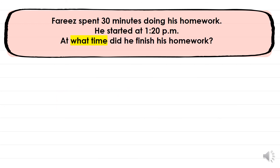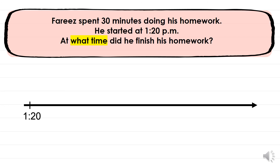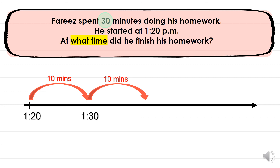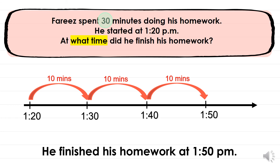Now let's move on to our last word problem in finding ending time. Faris spent 30 minutes doing his homework. He started at 1:20 p.m. At what time did he finish? The starting time is 1:20. Let's jump 30 minutes in three jumps of 10: 1:20 plus 10 is 1:30, plus 10 is 1:40, plus 10 is 1:50. So the ending time is 1:50. He finished his homework at 1:50 p.m.